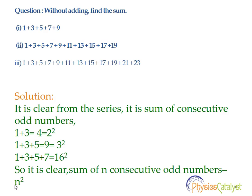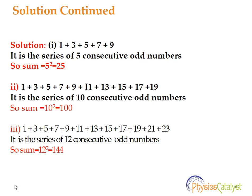Now we will apply this observation to the problems. Problem 1: 1 plus 3 plus 5 plus 7 plus 9. It is a series of 5 consecutive odd numbers, so the sum is given by 5 square, which is equal to 25.